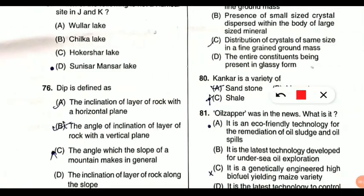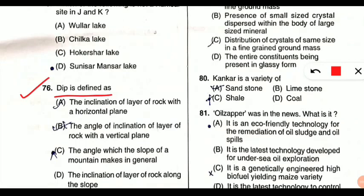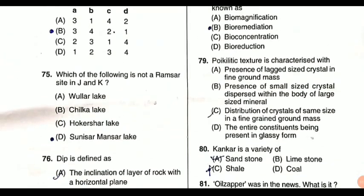We will continue today from question number 76, as we have already completed till 75. Question 76 is on your screen: dip is defined as what. This question comes from environmental geology. Dip is defined as the inclination of a layer of rock with the horizontal plane — specifically, the angle at which a planar feature or rock is inclined to the horizontal plane. That is what dip is known as.